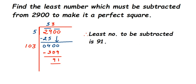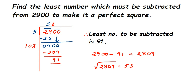As an additional note — if your teacher also asks for the square root — it's simple: 2900 minus 91 equals 2809, and the square root of 2809 is 53. We know this because 53 is the quotient we obtained during the division. Whatever quotient you get, that is the square root of the resulting perfect square number. I hope this is clear — drop a comment if you have any questions. Thank you for watching!